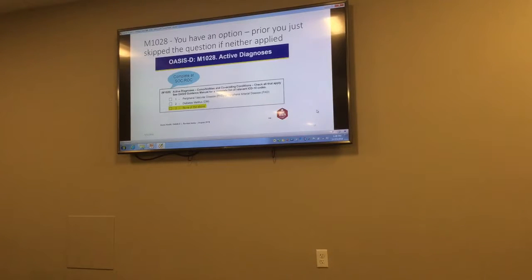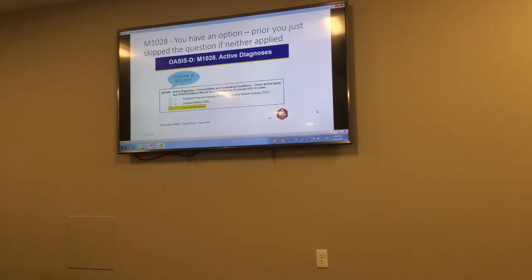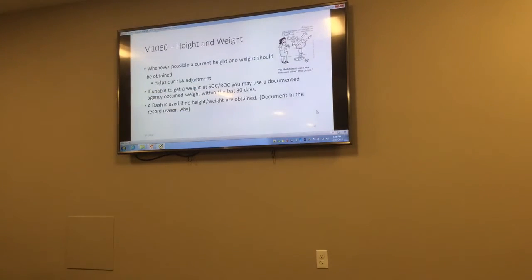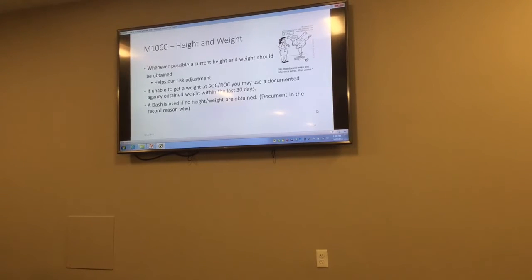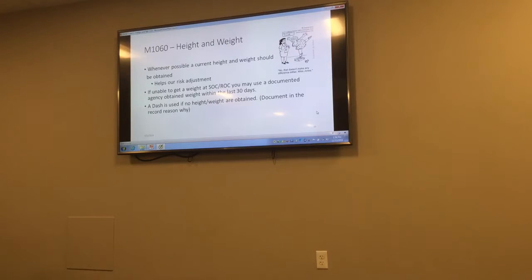Essentially, we want to capture the patient's data at start of care or resumption of care, before any interventions on our part, from the time you're in the house and the 24 hours before — which could include time in the hospital. Capture that, and hopefully by discharge we'll show some improvement. Regarding OASIS-D changes: M1028, the comorbidities question, is just adding a new option. Note that PAD does not include venous disease — it's just vascular or arterial. Venous stasis would not be considered there; there are very specific ICD-10 codes that apply.